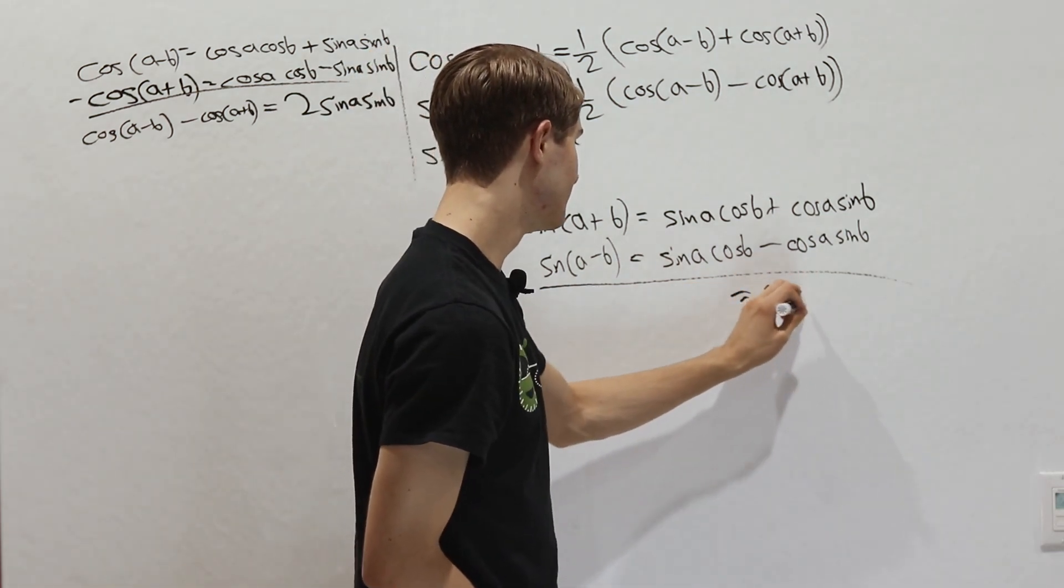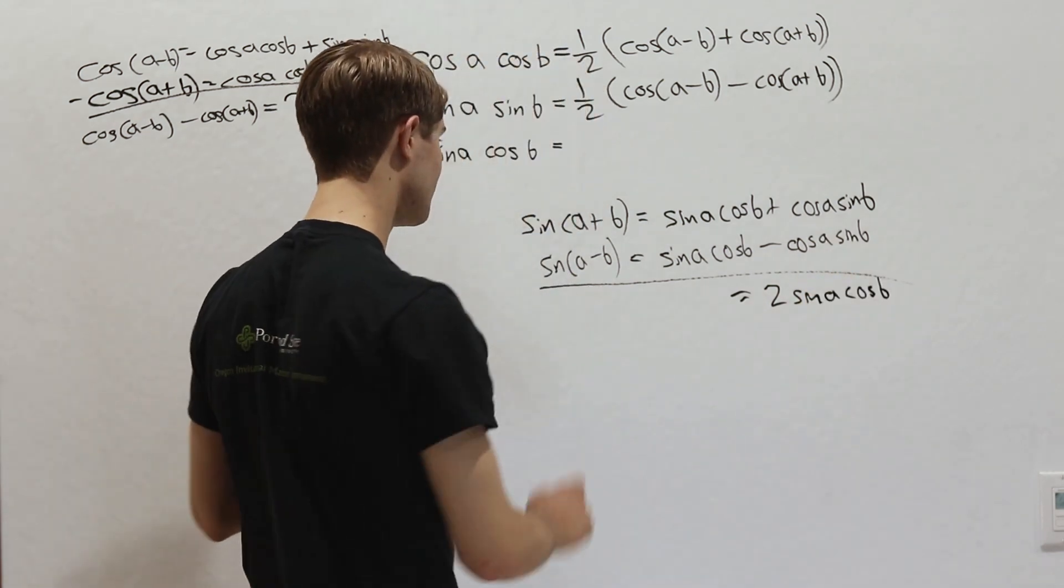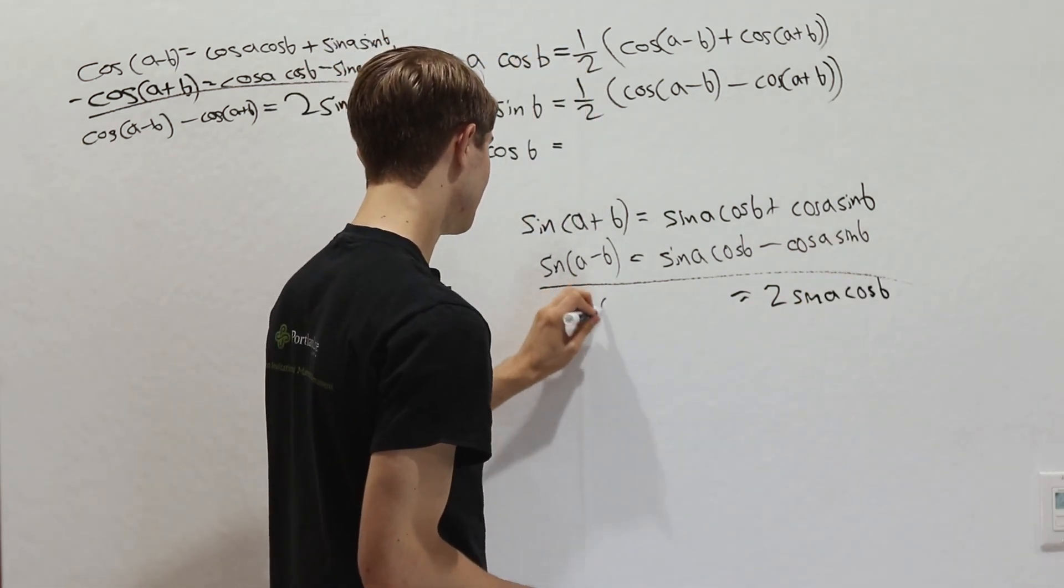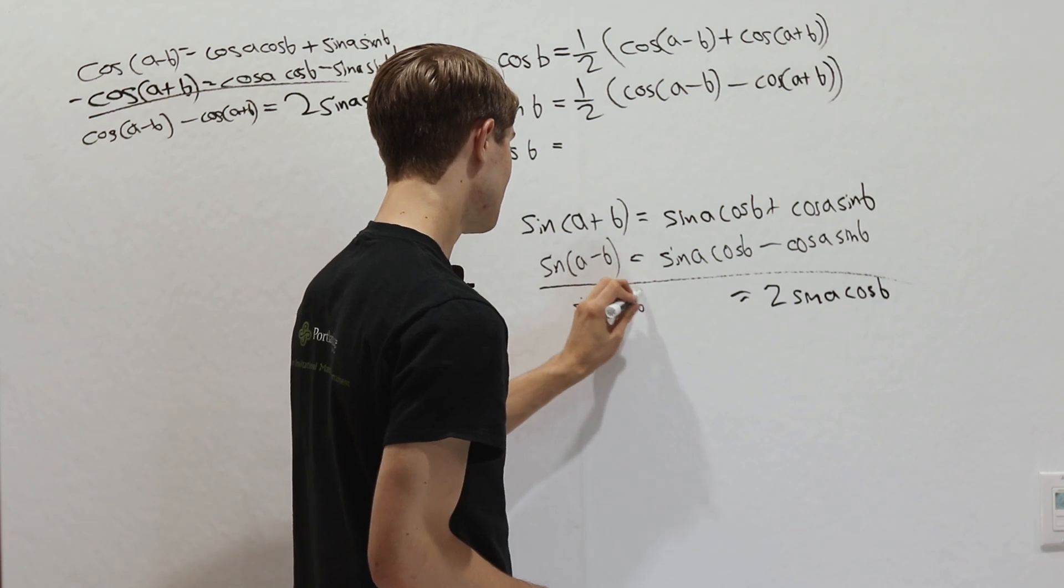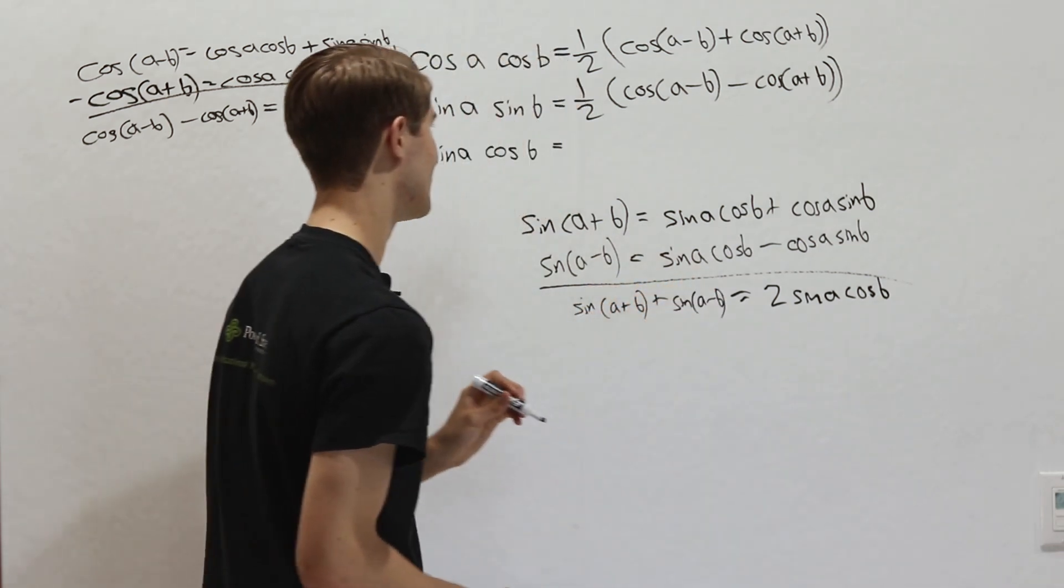and over here we're going to get 2 sine a cosine b. On the other side, we'll get sine a plus b plus sine a minus b, just like that.